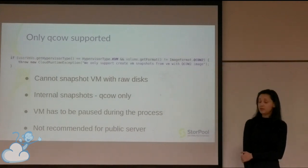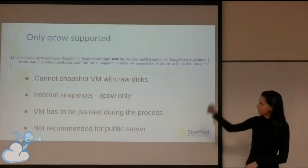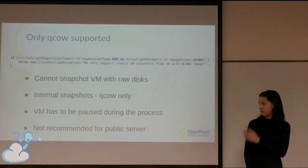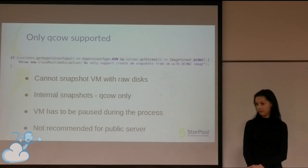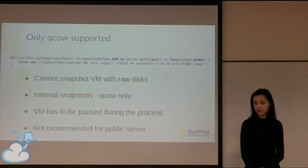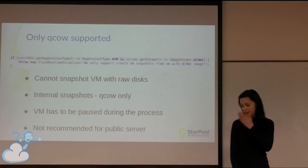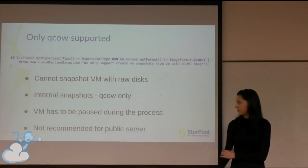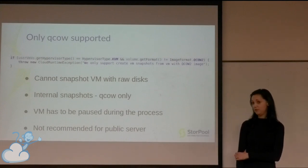If we have a virtual machine with raw disks on it, we will get an error because LibVirt supports only images in QCOW2 format. So if we want a consistent snapshot of a virtual machine with disks in raw format, we have to stop the virtual machine and snapshot all disks separately, one by one. However, it's not recommended to stop the virtual machine for a production server.